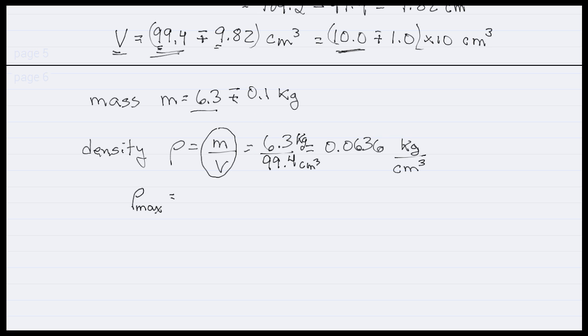So, with the numbers we have, the maximum mass is 6.4 kilograms. And volume, the maximum volume, well, it's the 99.4 plus, oh sorry, we don't want the minimum volume. The minimum volume is 99.4 minus 9.82, and that's 89.58. And I believe, and I'm hoping again I didn't do this wrong, is 0.0714 kilograms per centimeters cubed.